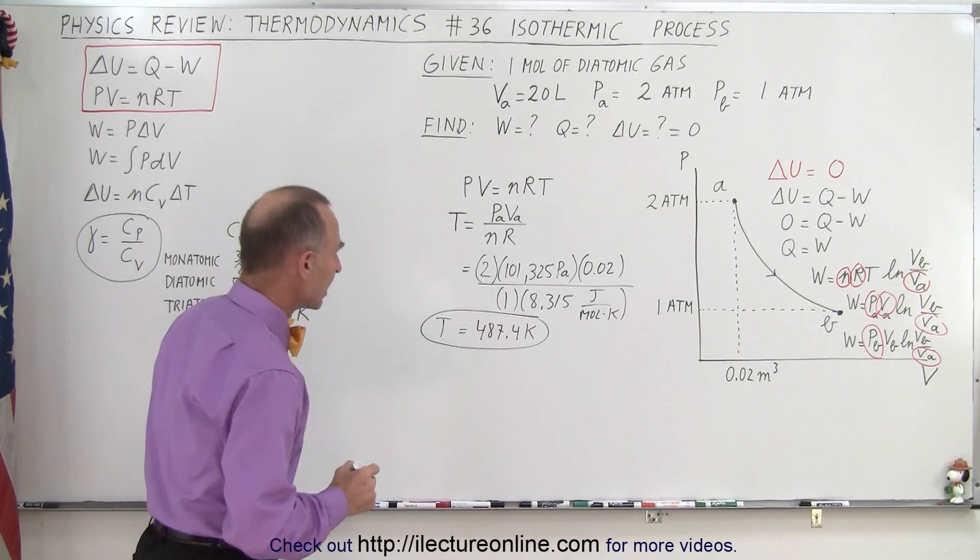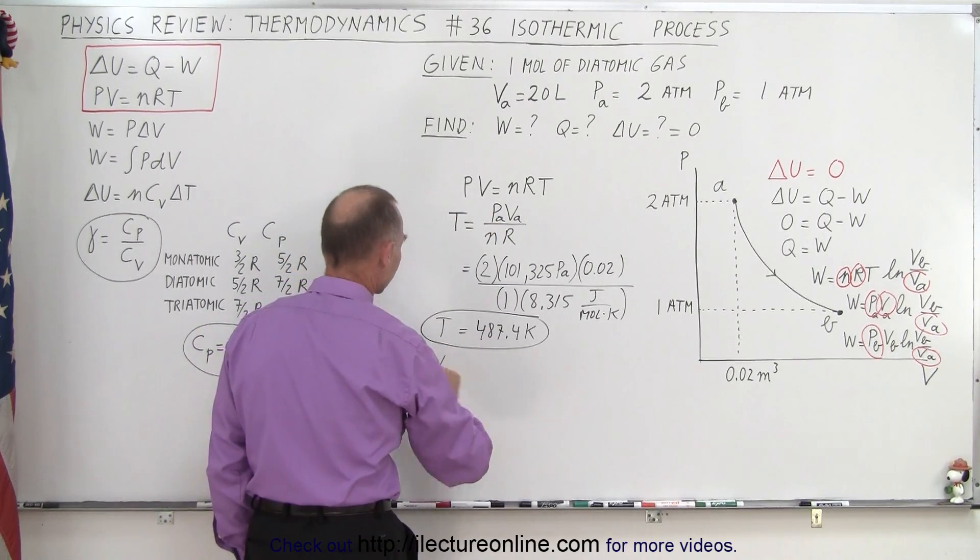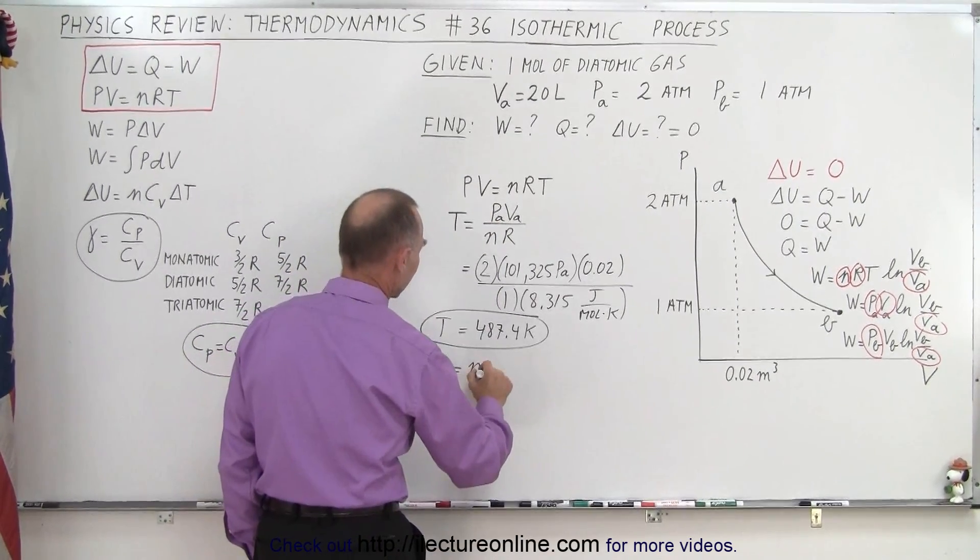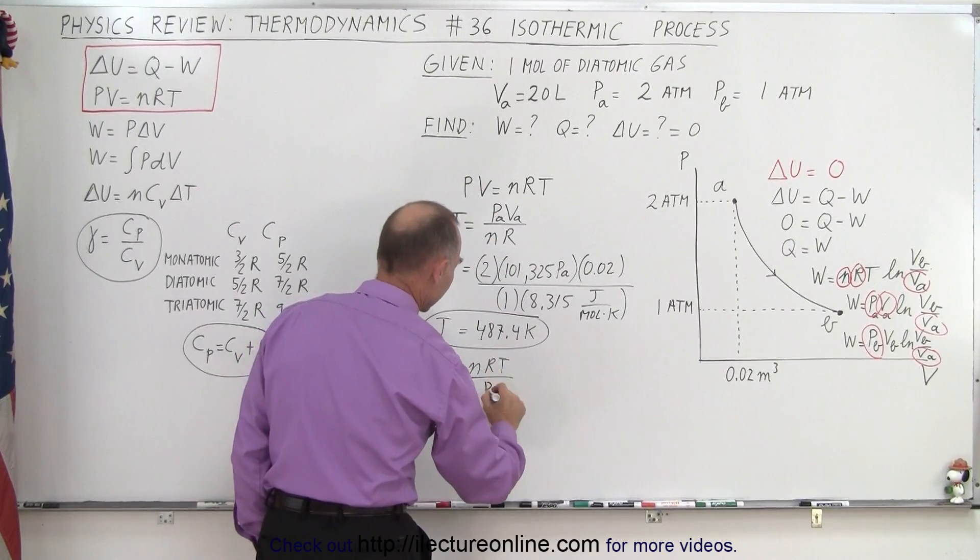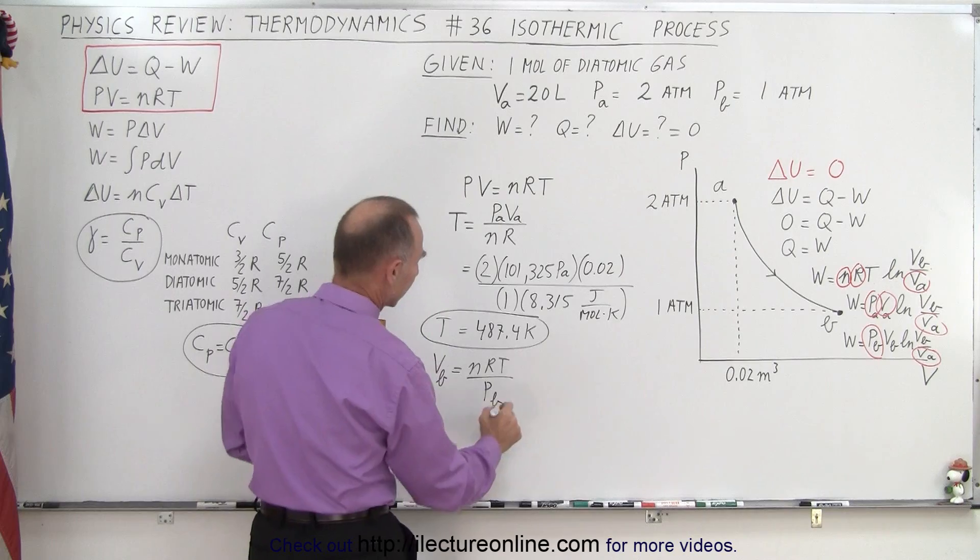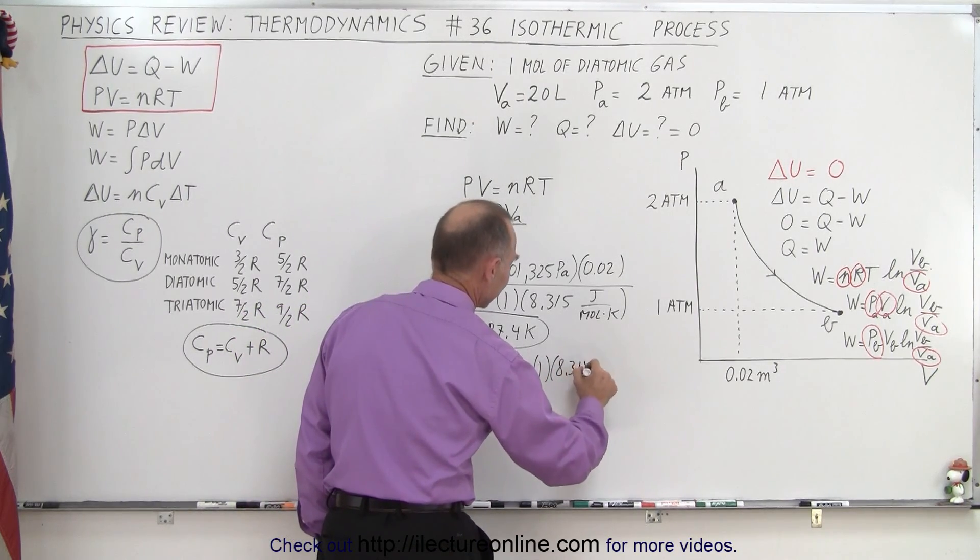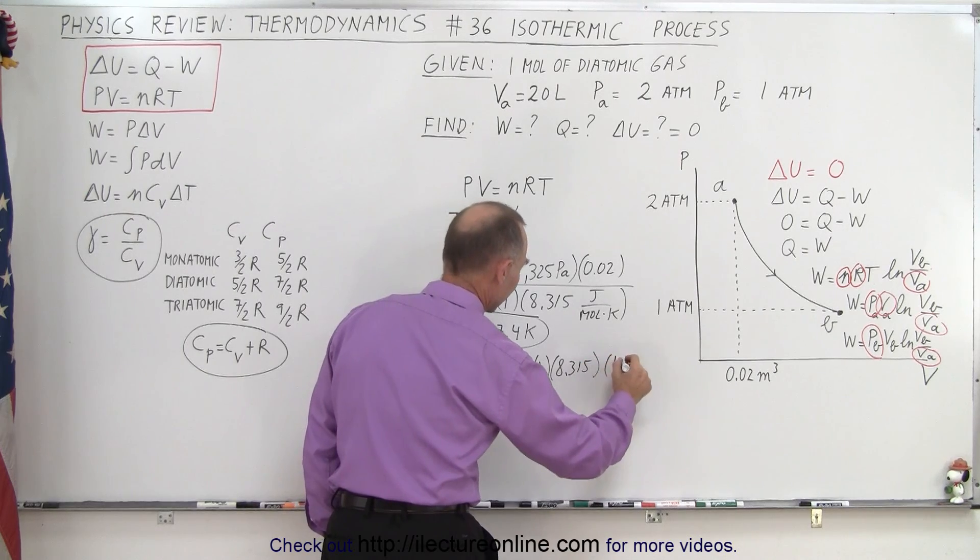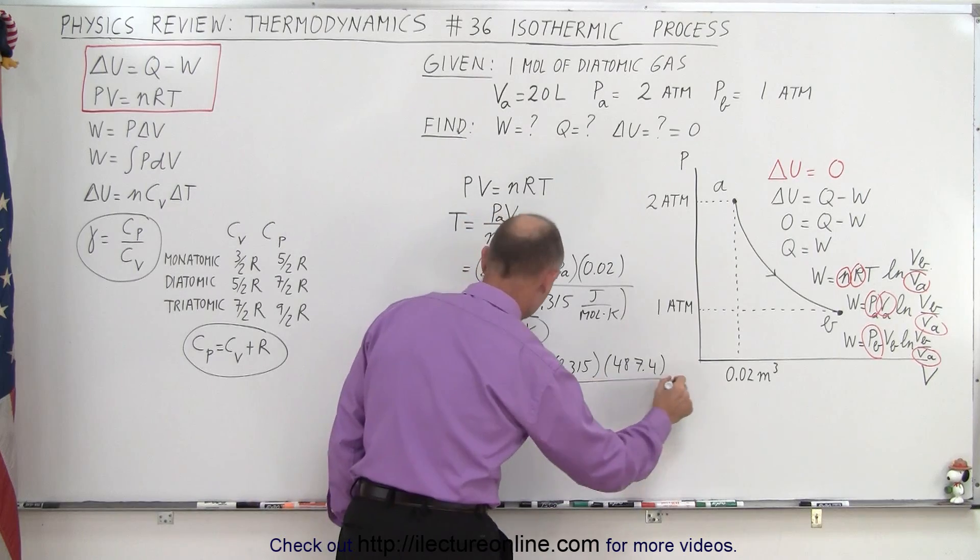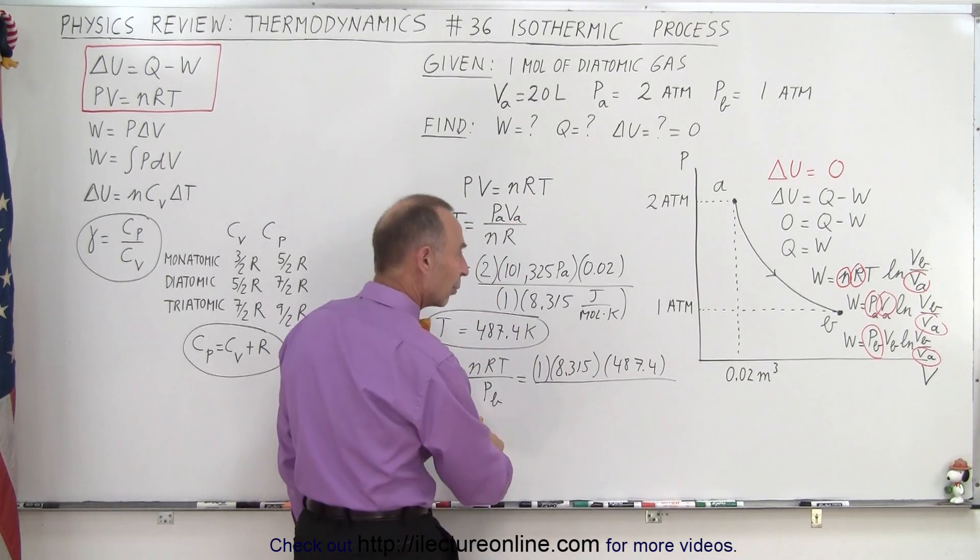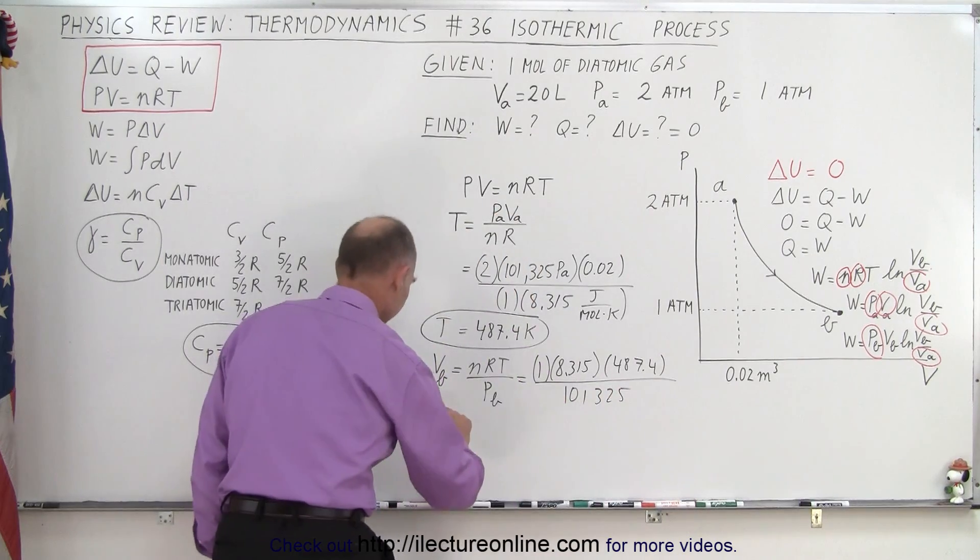Now we need the volume at B. So we solve this equation again, but now for the volume, and it will be the volume at B. That is equal to nRT divided by the pressure at B. Of course, these need to match up. And so in this case, that's equal to 1 times 8.315 times the temperature, which we just found, all divided by the pressure at B, which is 1 atm, 101,325. Alright.